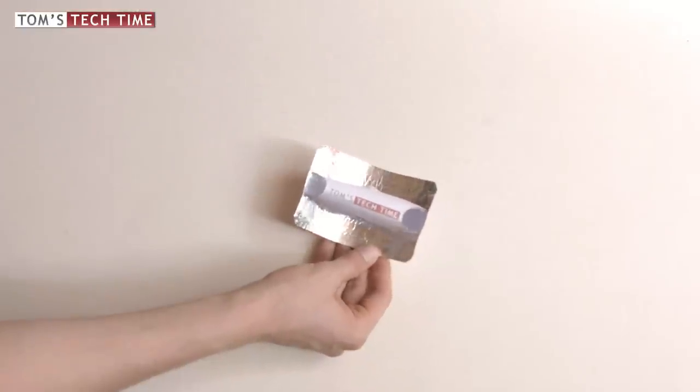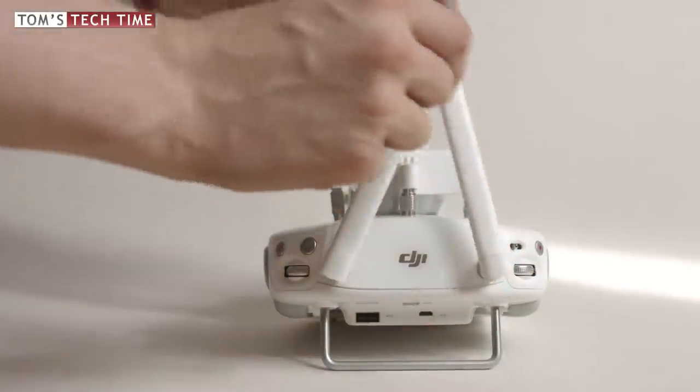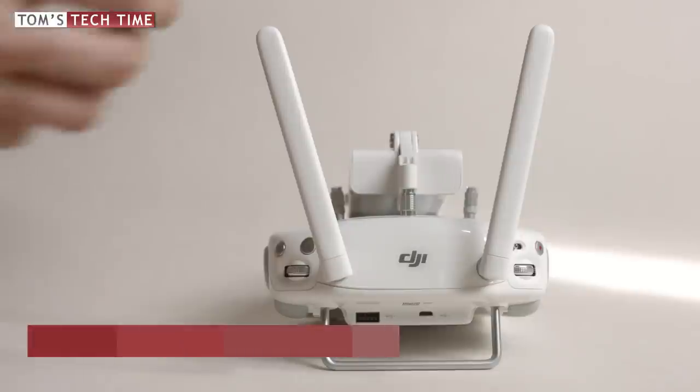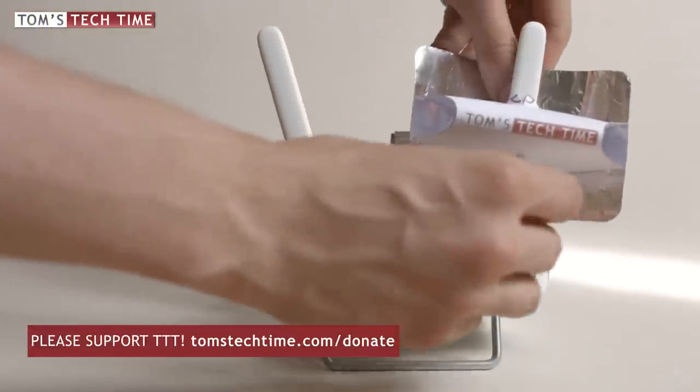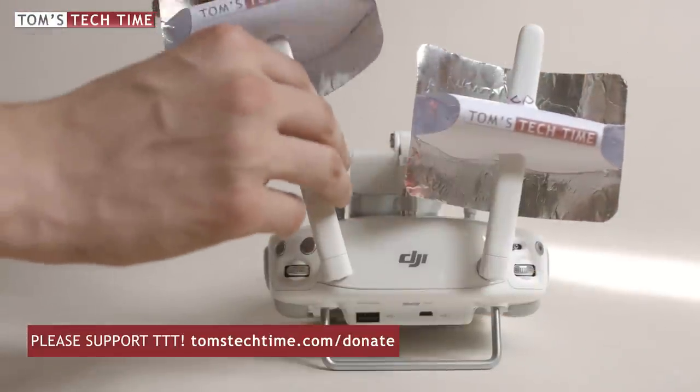Now take your remote controller and shove the antennas through the holes. And adjust the antennas. Now you are already done and can enjoy your very own windsurfer antenna. But don't forget to create another one for the second antenna.